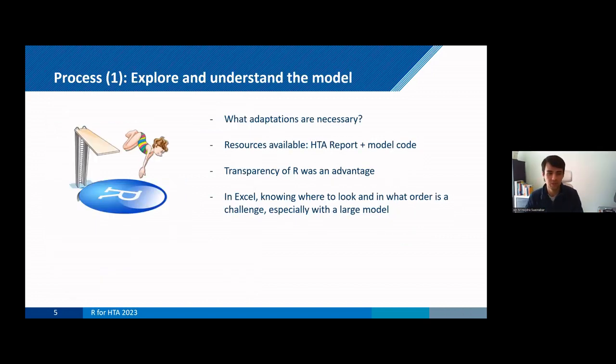So this brings us to the process we followed in adapting the model. And the natural first step here was to just dive into the model to know exactly what we were working with and to then identify what adaptations were necessary. So with the HTA report itself, plus the relevant R scripts, we had enough information to detect all the changes we needed to make. And in the next slide, I'll present the main differences. But just to already mention that this initial step of exploring a model already highlights a major advantage of using R because the level of transparency it can offer is really something that we couldn't have done without.